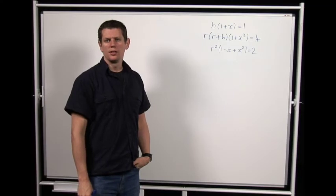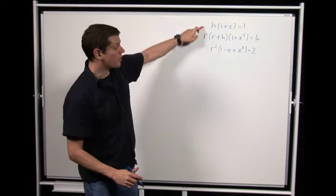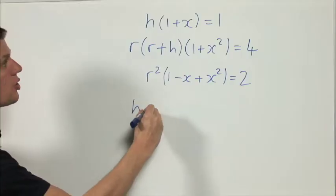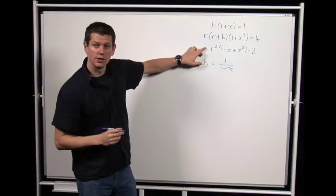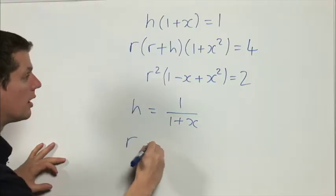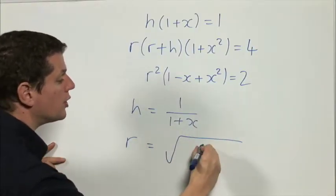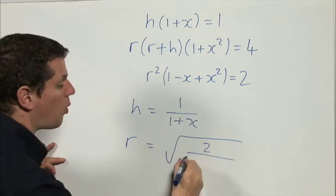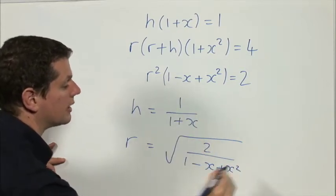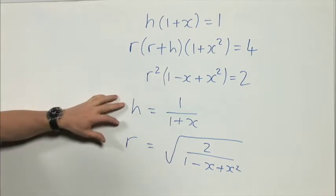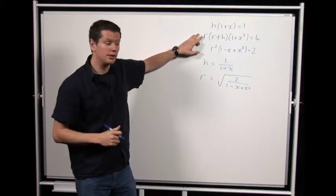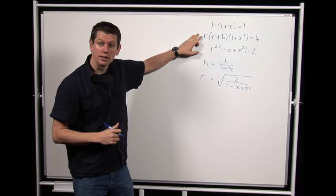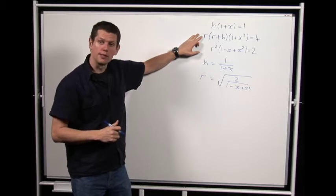The natural thing to do now seems to be to get everything in terms of x. With the first equation I can write h = 1/(1 + x). With the last equation I can write r = √(2/(1 − x + x²)). Now I can substitute these expressions for h and r into the middle equation and get an equation in the single variable x. I'll need a bit more space on the whiteboard to do that.